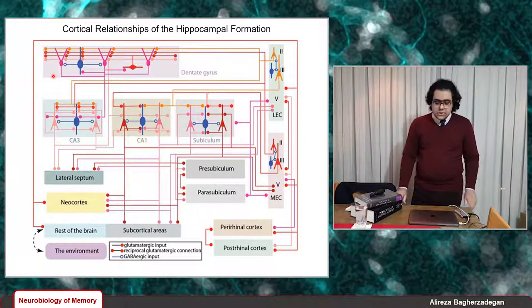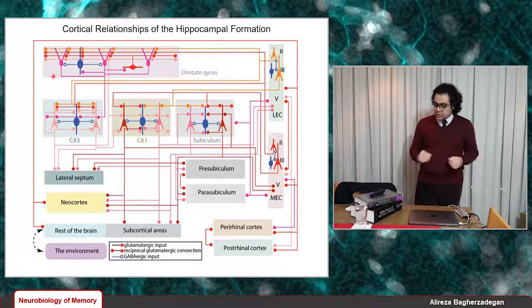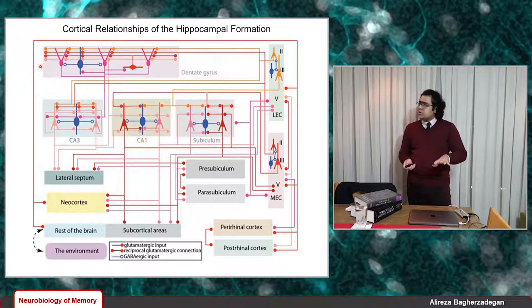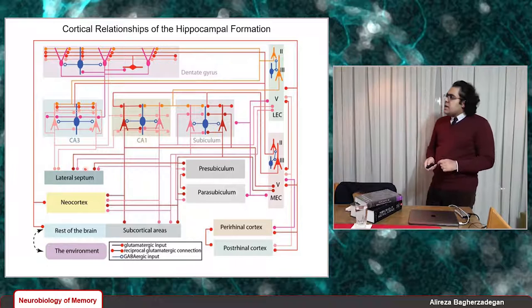Before talking about the hippocampal microcircuits, I want to review the mesoscale synaptic circuitry. By mesoscale, I mean the connectivity at an intermediate level — not microcircuits, not macro scale. This figure shows the cortical relationships in the hippocampal formation, which is part of the limbic system and includes the hippocampus plus associated areas such as the dentate gyrus, the entorhinal cortex, the subicular cortex, and other areas.